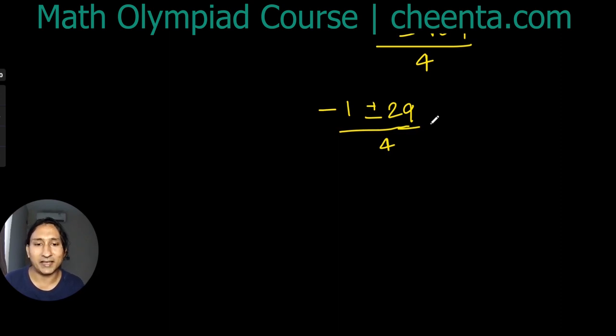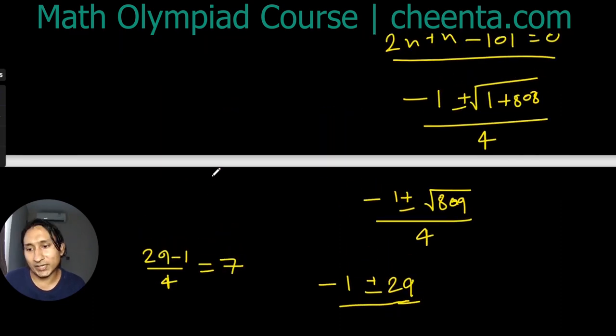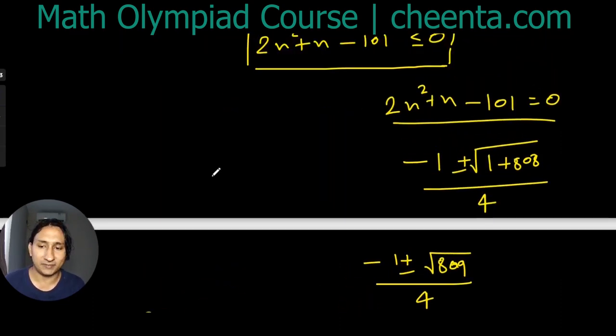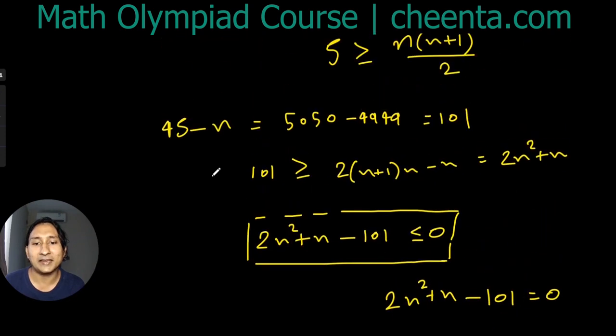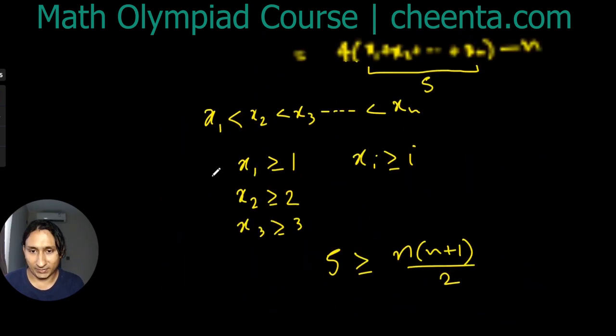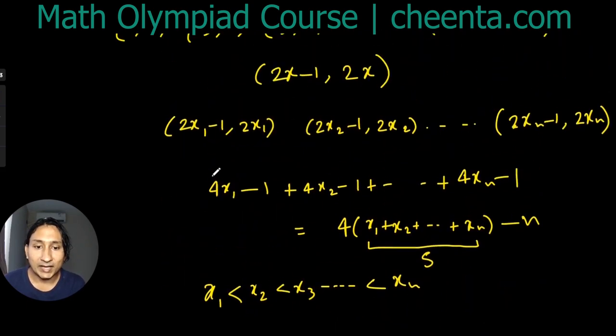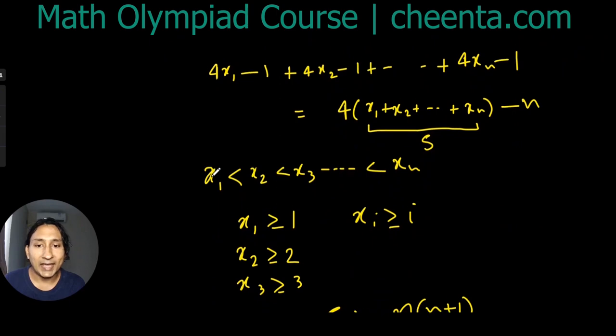One side is obviously negative, which is (-1 - something)/4. We are not worried about that because we want positive values of n. So we'll just take (29 - 1)/4, that is 7. So we don't need to look beyond 7. We need to look for n from 1 to 7, that's all.